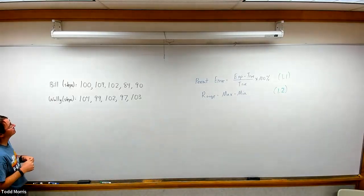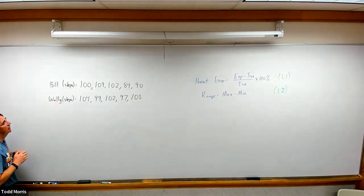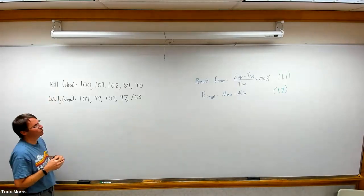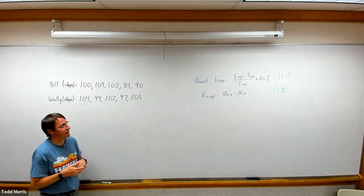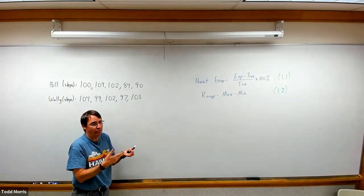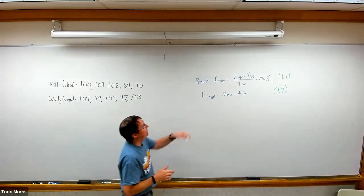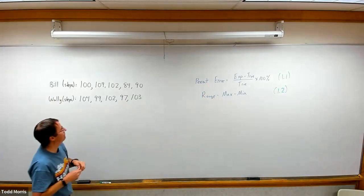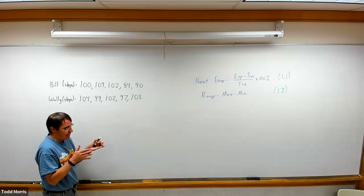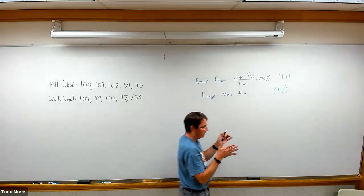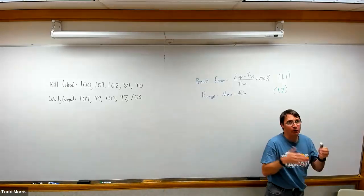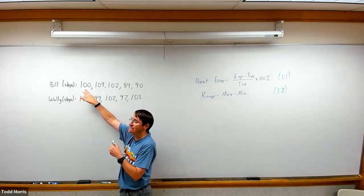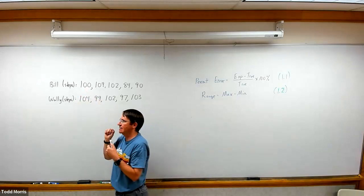Usually we have a fictional story where Bill and Wally, two friends, both have two different fitness trackers, and they're curious as to which one's a better fitness tracker. They know they can quantify better by percent error for accuracy and range for precision. To do this, they decide that they will individually walk exactly 100 steps. After 100 steps they've walked, they will then note on their fitness tracker how many steps the fitness tracker thinks that they walked.